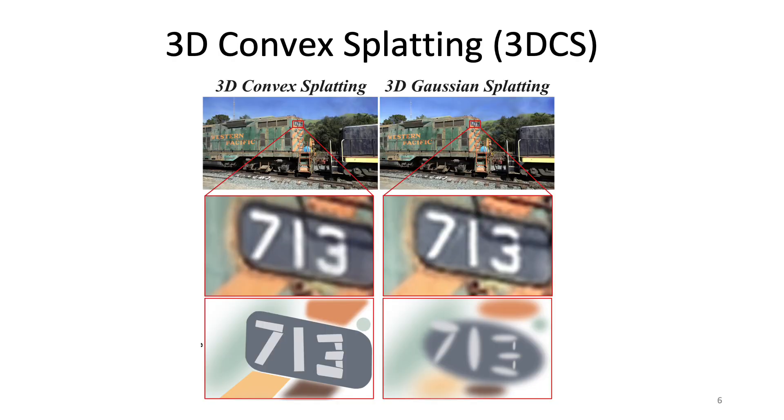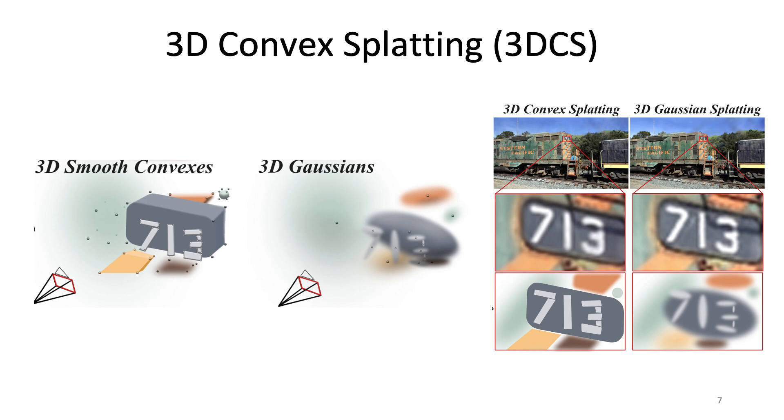In this paper, we proposed 3D Convex Splatting, which is also trying to do novel view synthesis and 3D reconstruction, but is able to model sharp bounds and sharp objects utilizing the proposed 3D smooth convexes, which can work as smooth and as transient as Gaussians, but also can work with sharp and hard edges.